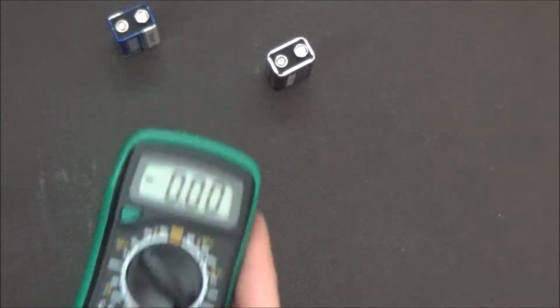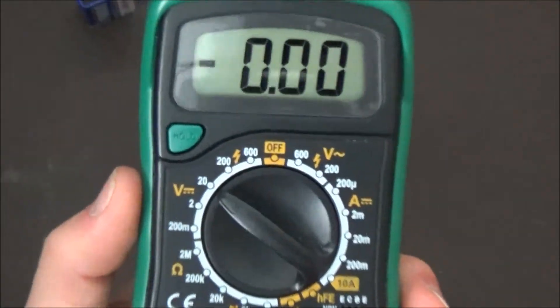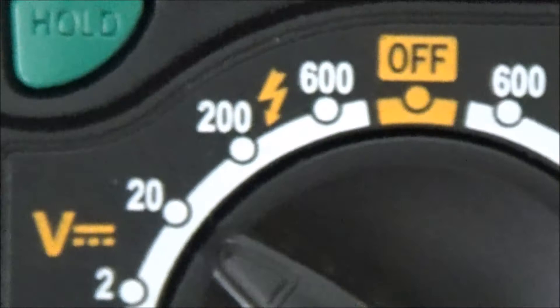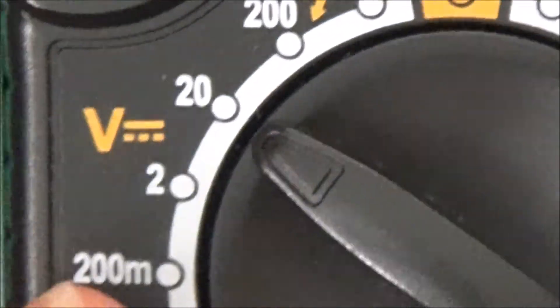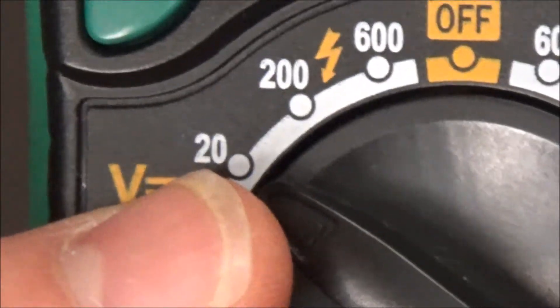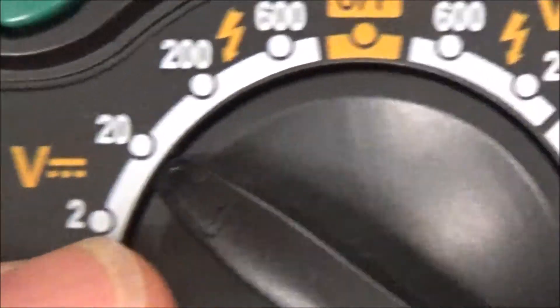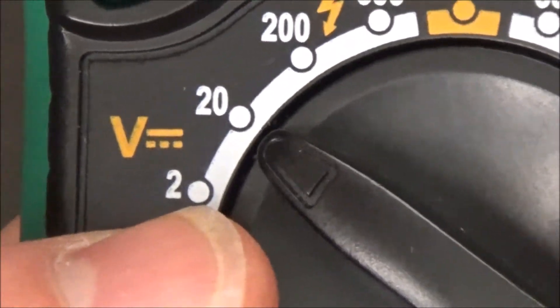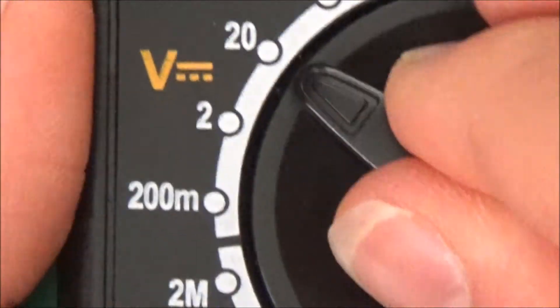Again, I'm still on the 20 volt DC scale because that's as far up as I'm really gonna measure. No battery I'm measuring is gonna be over 20 volts. That's as much as it can measure. If I were on this mode probing 9 volt batteries, let me just show you what it would do.